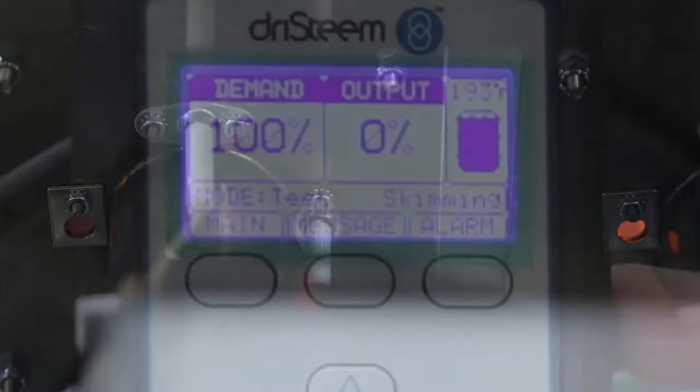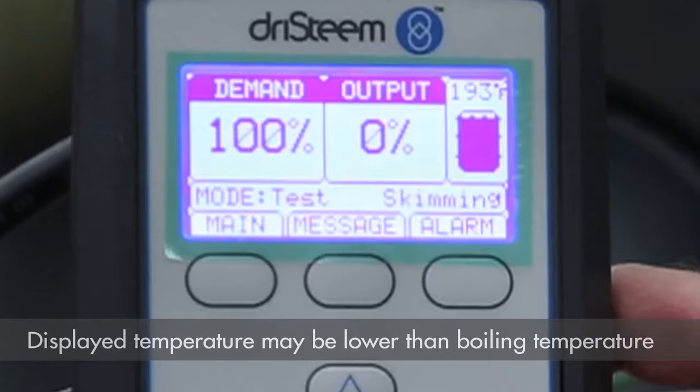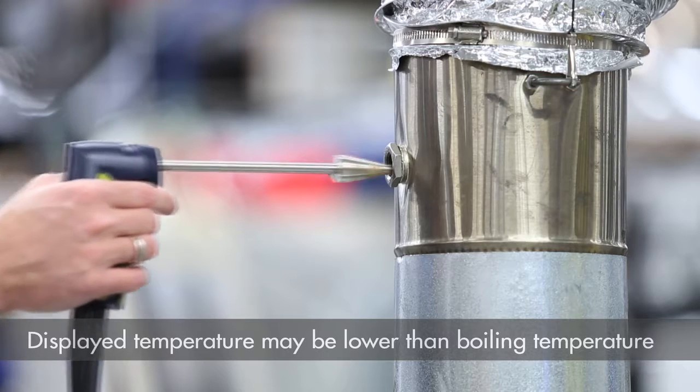Make sure all the burners fire up. When the tank reaches boiling temperature, insert the combustion analyzer probe into the flue.